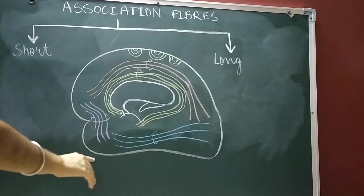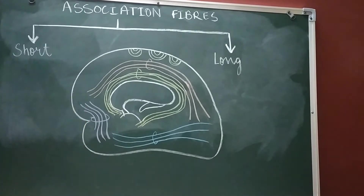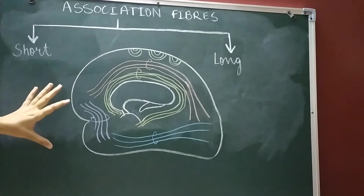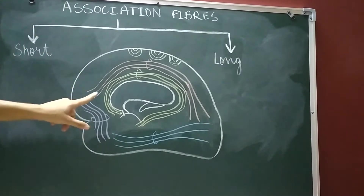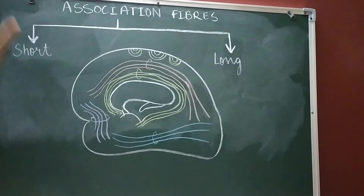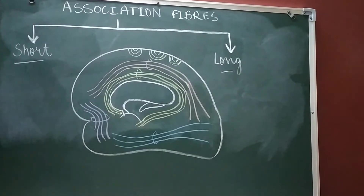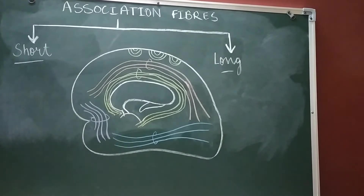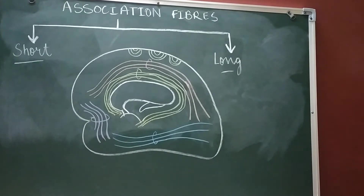As you can see in this diagram, it basically represents association fibers connecting regions in the same hemisphere. The association fibers are of two types: short and long association fibers. The short association fibers are the ones which interconnect the adjacent gyri by hooking around the sulcus, and thus they are also termed as the arcuate fibers or the U-fibers.